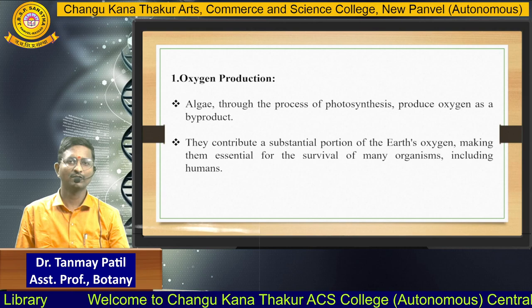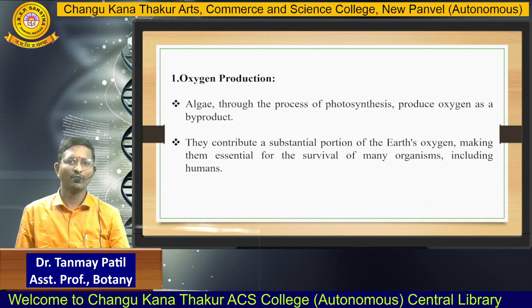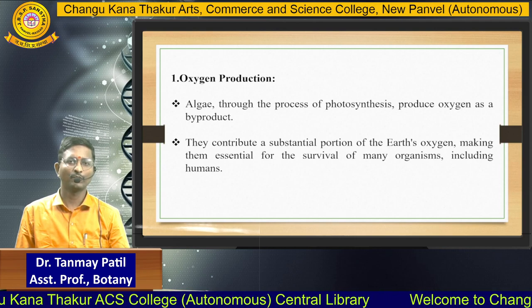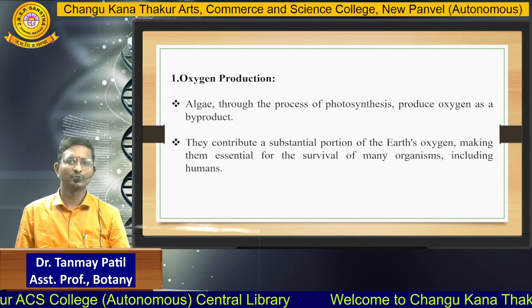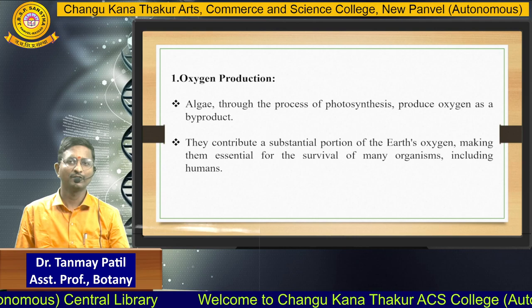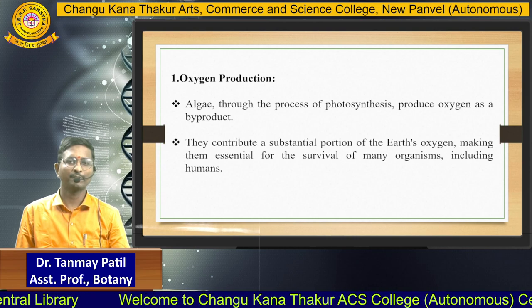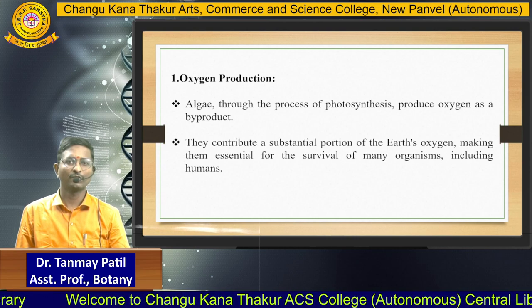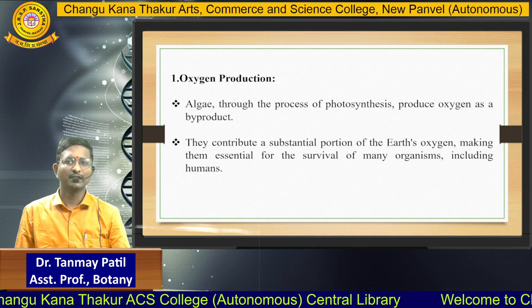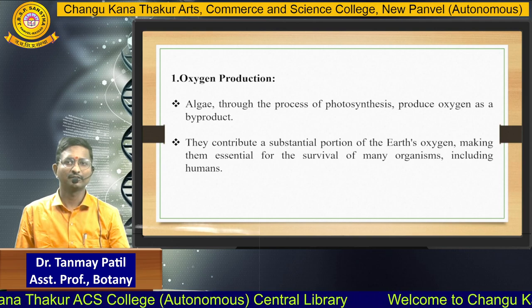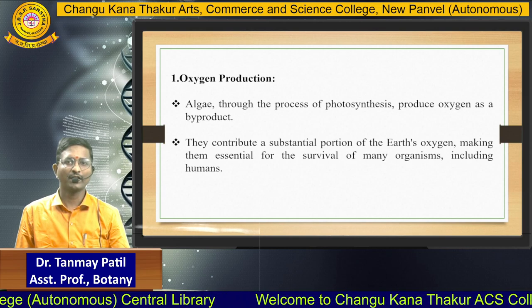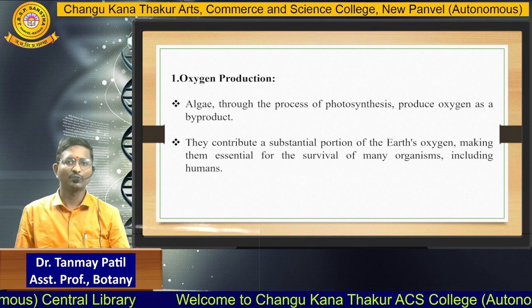First, oxygen production. As we all know, algae are autotrophic, so they contain chlorophyll pigments. Algae, through the process of photosynthesis with the help of chlorophyll pigment, produce oxygen as a by-product. They contribute a substantial portion of the earth's oxygen, making them essential for the survival of many organisms, including humans.